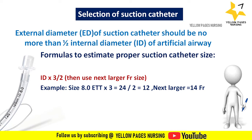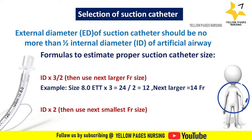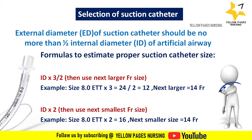Formula 2: internal diameter multiplied by 2 — then use the next smallest French size. For example, if the ET tube internal diameter is 8: 8 × 2 = 16, and the next smaller French size is 14. The suction catheter to be used will be 14 French.